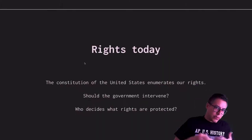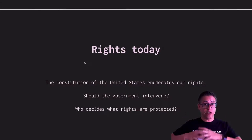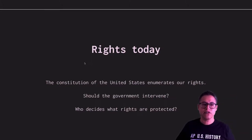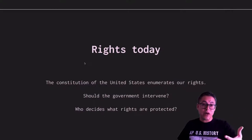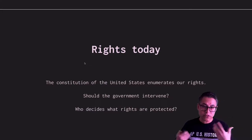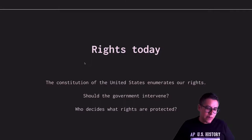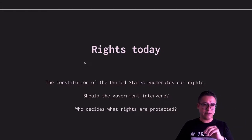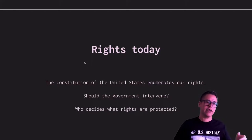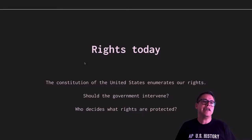Today, rights are debated differently. Americans still debate whether we all enjoy full rights. The Constitution enumerates our rights under the Bill of Rights — the first 10 amendments — and there have been 17 amendments after that. The government tries to intervene to protect minority rights while preserving the rights of the majority. But Americans debate who decides how many rights are enumerated, because many are wary of giving the government too much power, while others believe it is completely the government's duty to protect people's rights.